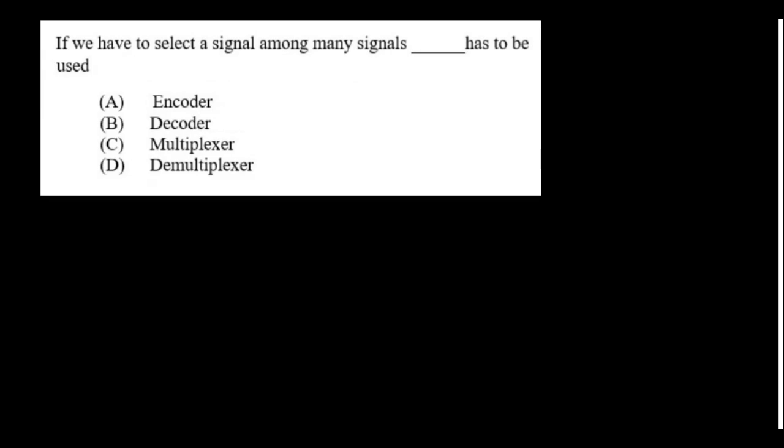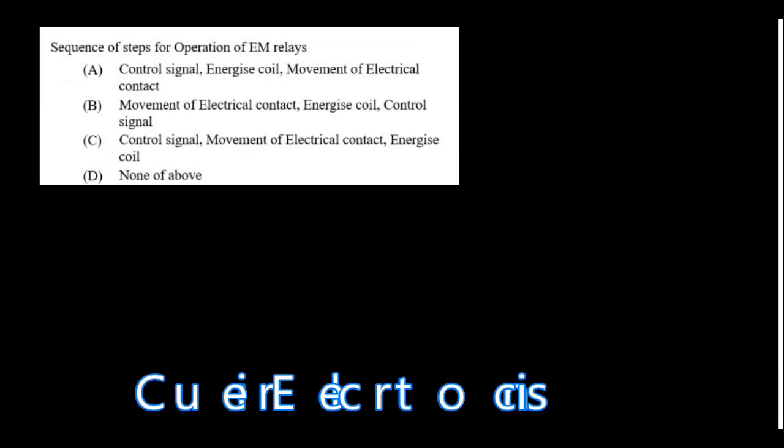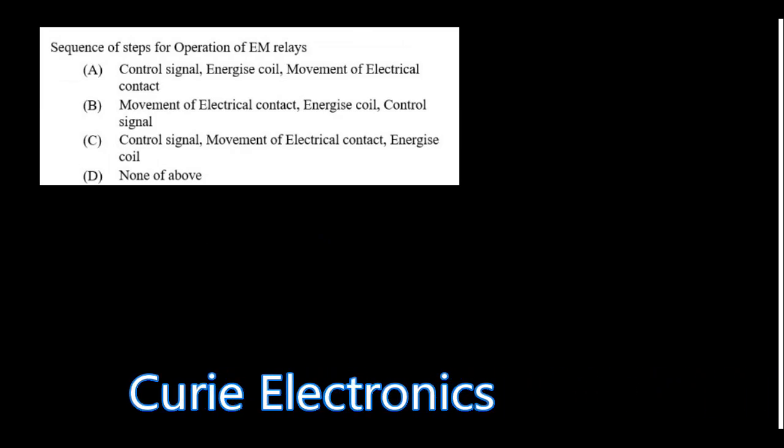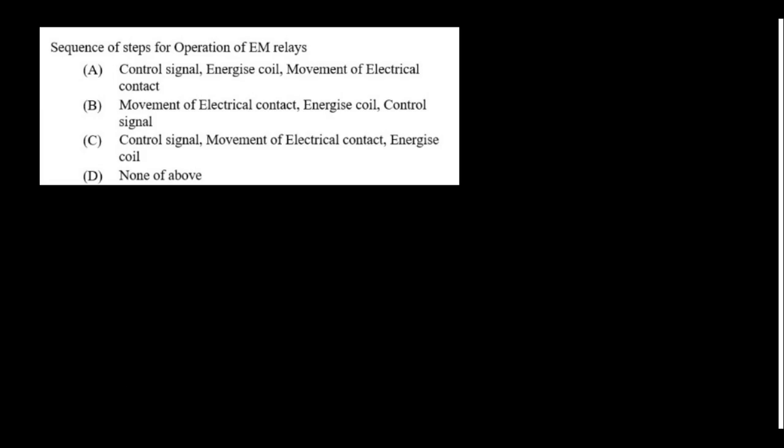If we have to select a signal among many signals, a multiplexer has to be used. Multiplexer means many to one—many inputs, one output. Sequence of steps for operation of EM relays: First you drive the relay coil through a transistor or MOSFET with a control signal, then the relay coil will get energized, after that the movement of contacts happens. So option A is the right answer.